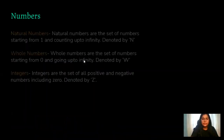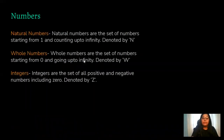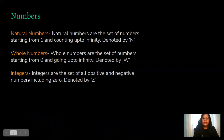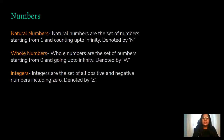We have a few types of numbers — natural numbers, whole numbers, and integers. If we talk about natural numbers, natural numbers are the set of numbers starting from one and counting up to infinity, denoted by N.